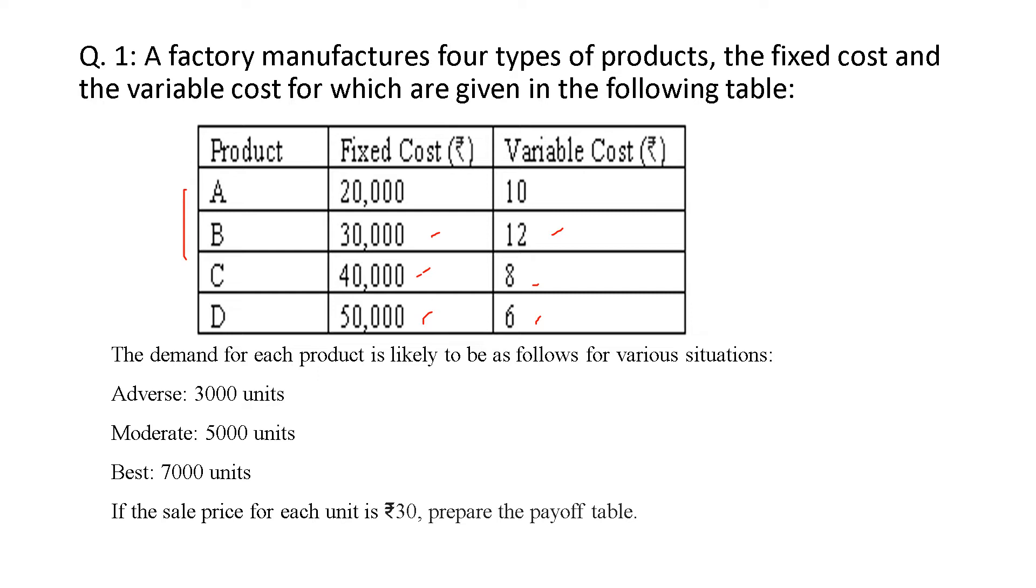Also given, the demand for each product is likely to be as follows for various situations. Demand for adverse is 3,000 units, for moderate 5,000 units, and for best 7,000 units. If the sale price for each unit is rupee 30, that is also given. For each unit, the selling price is rupees 30.